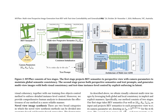MVPBEV is a novel method for multi-view perspective image generation comprising two stages. The first stage projects bird's eye view, BEV, semantics to perspective views with camera parameters, maintaining global semantic consistency. This process is visualized in Figure 3, where BEV semantics are projected to multiple perspective views and overlaid on original RGB images for comparison. The second stage parses both perspective semantics and text prompts, generating multi-view images with visual consistency and test-time instance-level control by explicitly enforcing latent visual coherency.